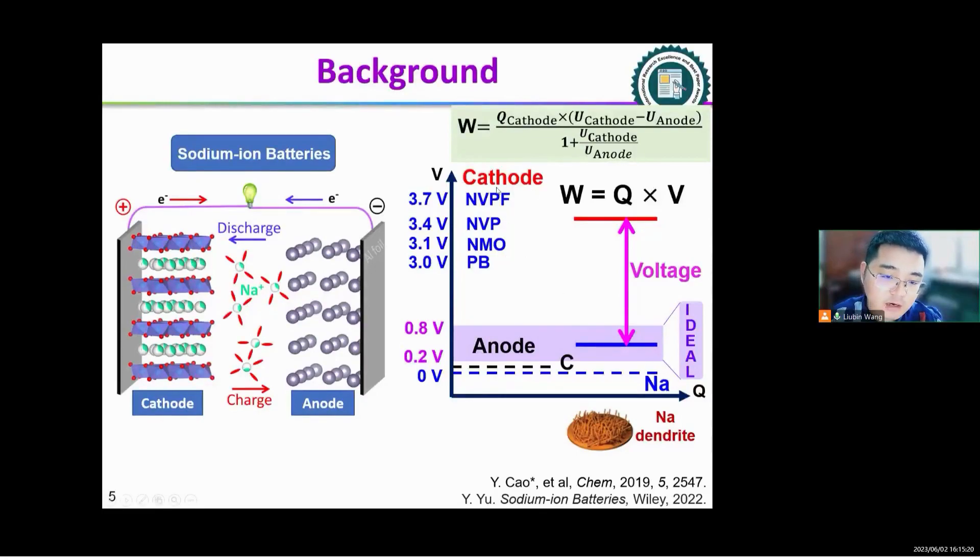While there are several successful cathodes, such as NVP or other oxide materials, the hard carbon anode has low theoretical capacity and safety problems. Thus, exploring high capacity, high safety anodes is still a challenge.